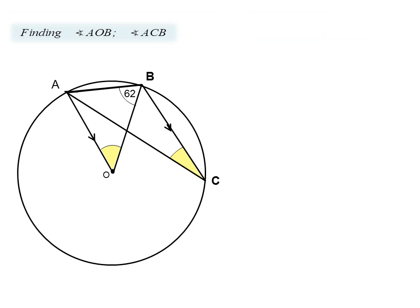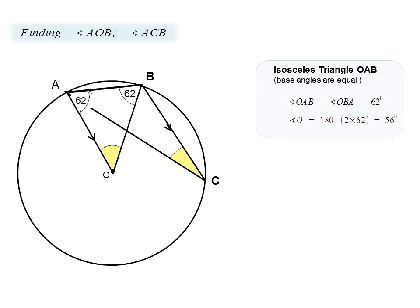Let us proceed to find the angles shown in yellow. Applying our first theorem — for the isosceles triangle, the two base angles are equal — we are given angle B as 62 degrees, therefore angle A is also 62 degrees, and the other angle in the triangle will be 56 degrees, since three angles must add to 180 degrees.